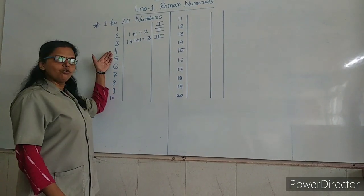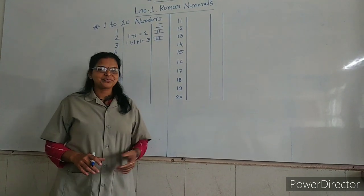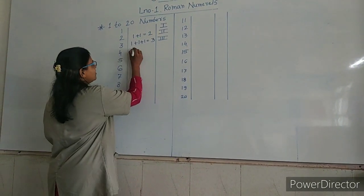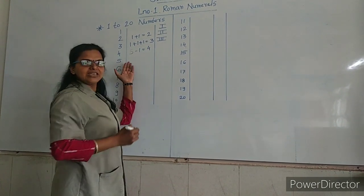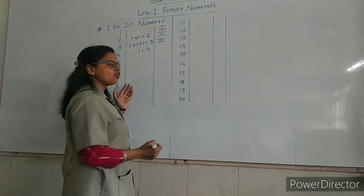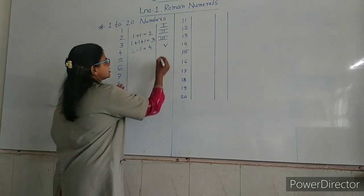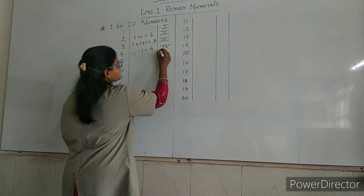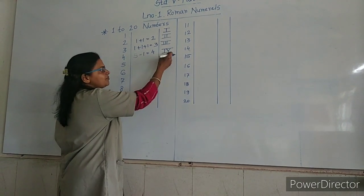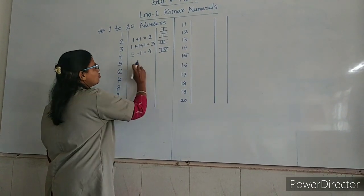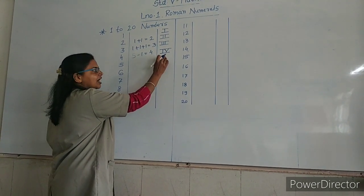Now, 4. Can you repeat I 4 times? No. 4 is 5 minus 1. V is the symbol used for 5. Write I on its left-hand side. Subtract I's value from V's value. So, 5 minus 1 is equal to 4. 4 is IV.